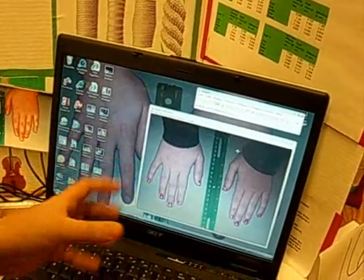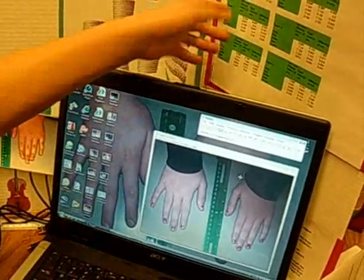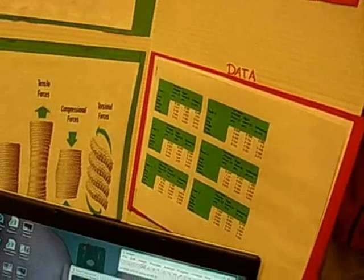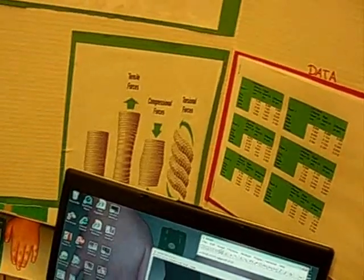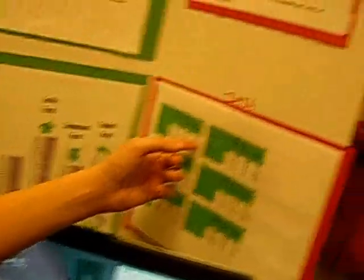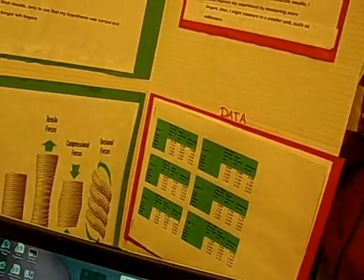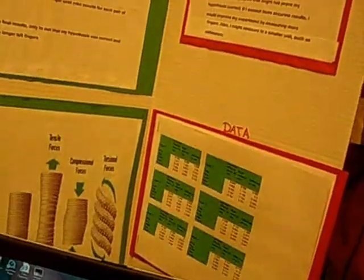I continued to do that for all the fingers on everybody's hands and I graphed them. I ended up coming up with the conclusion that string players do have longer left fingers than right fingers because there was a difference. But it wasn't by much, not even a centimeter, so that's why you probably can't tell if you were just to look at them.